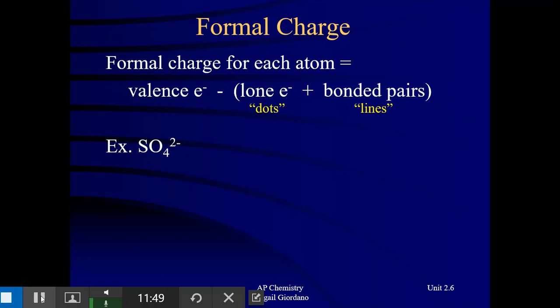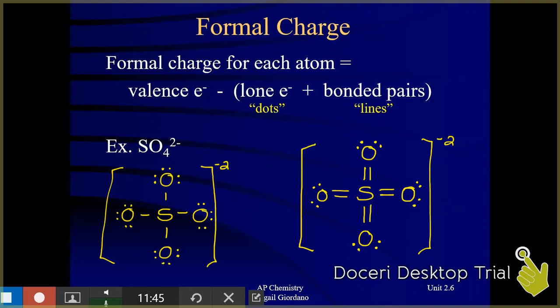When you can draw several different structures that are still correct according to our rules for drawing Lewis structure, you can use this concept called formal charge. We're going to use formal charges on the atoms to help us decide which structure is best. The take-home message here is the more formal charges of zero we get, the better, the more likely that is the correct structure. What I'm going to put up on the screen is two potential ways to draw the polyatomic ion sulfate.